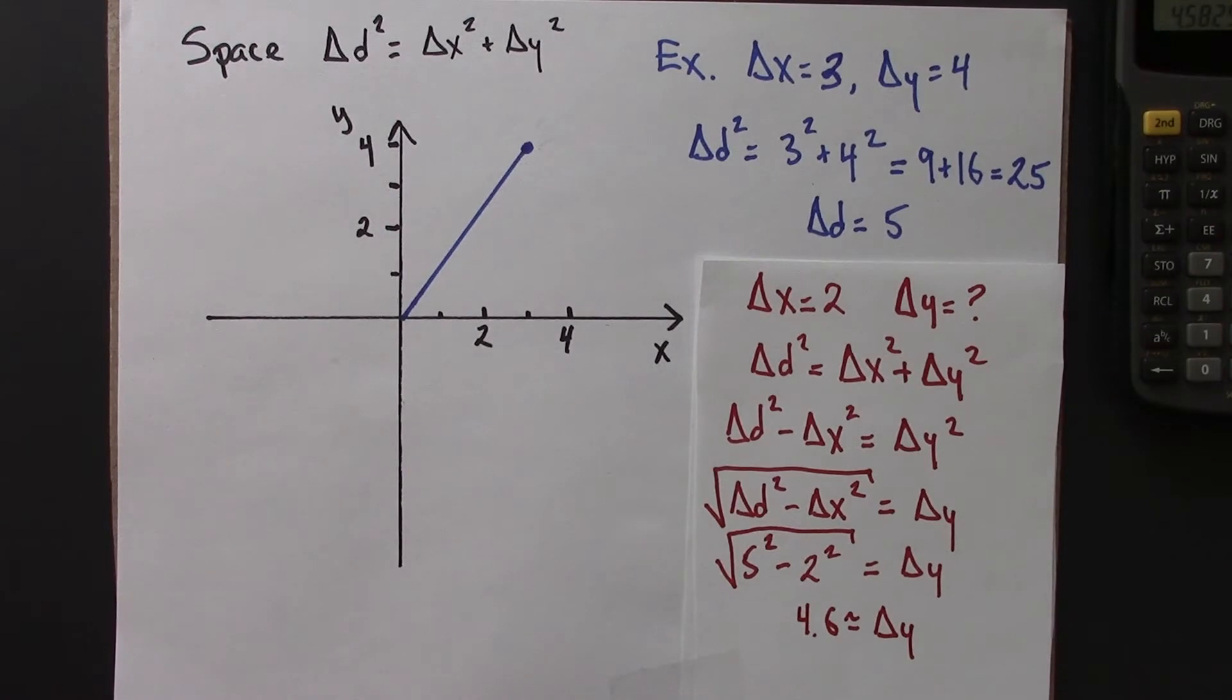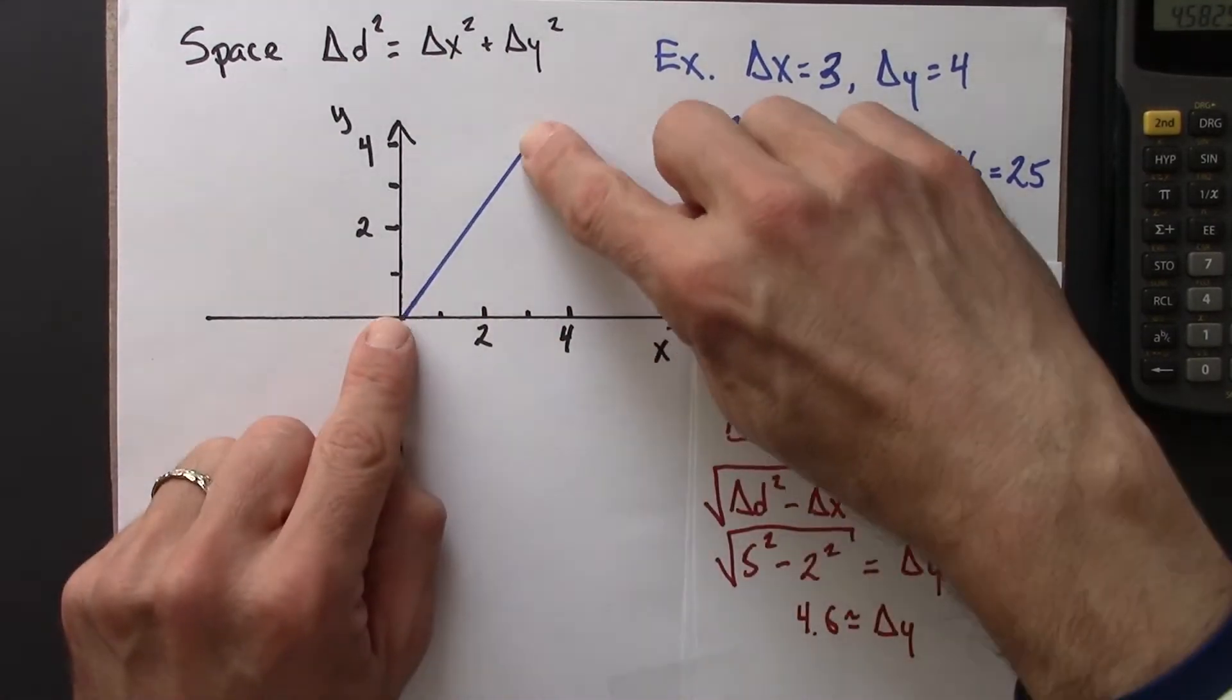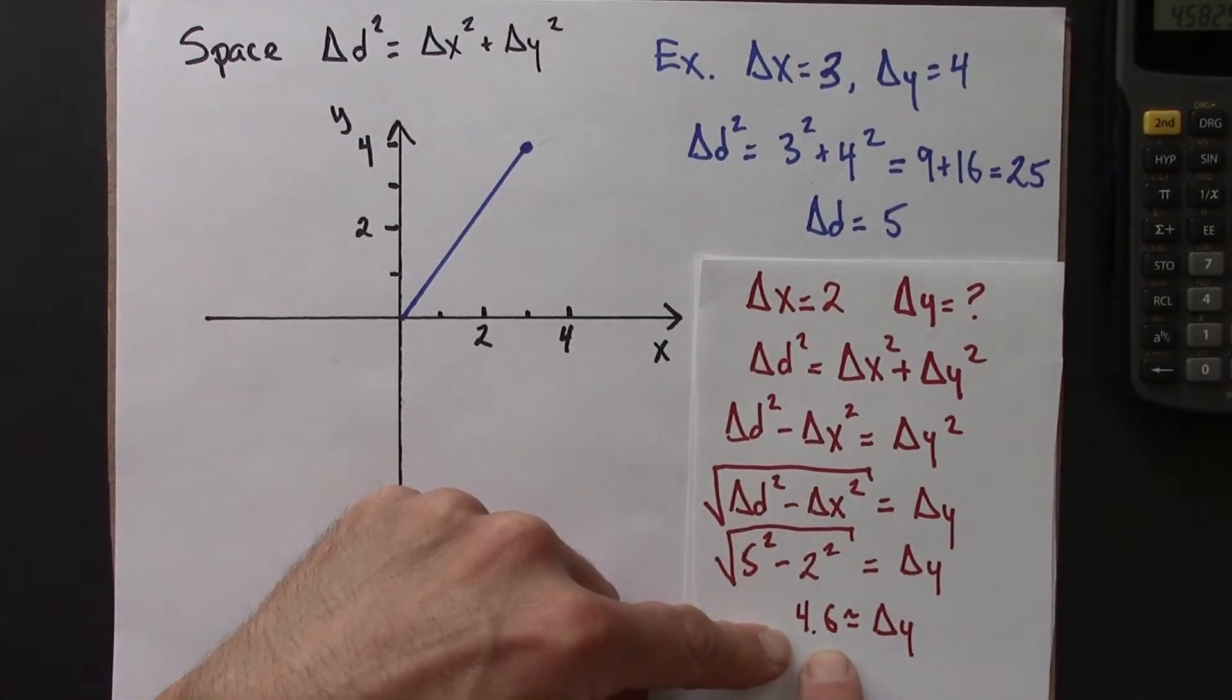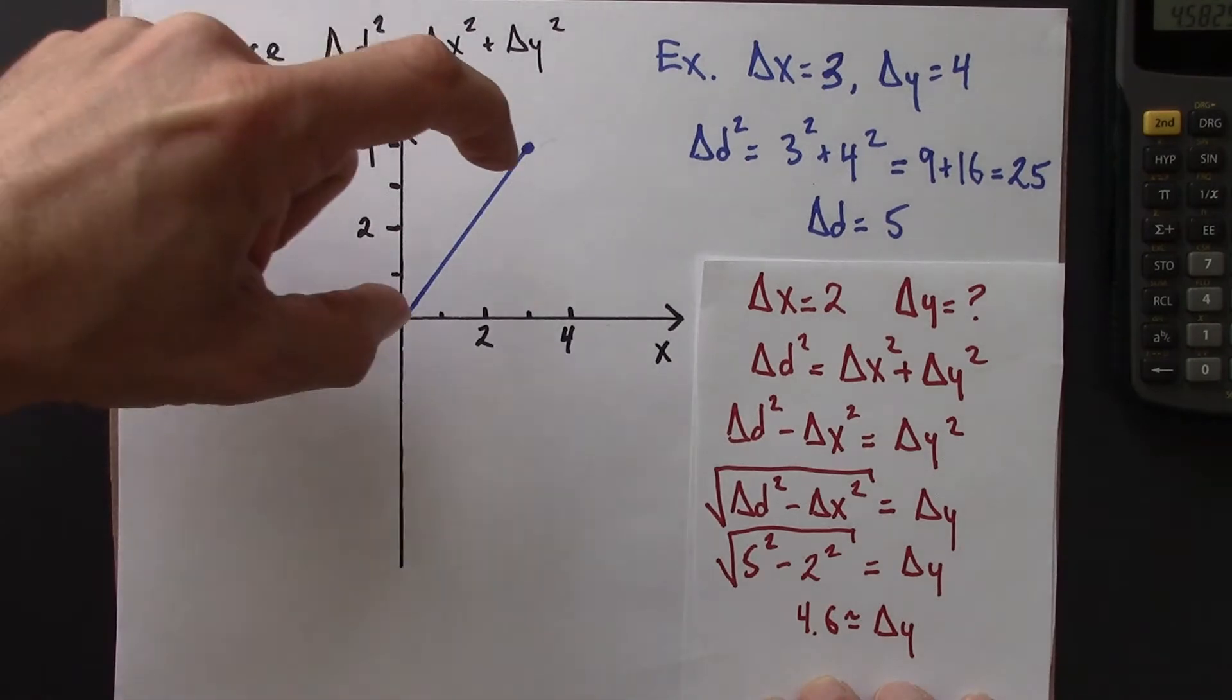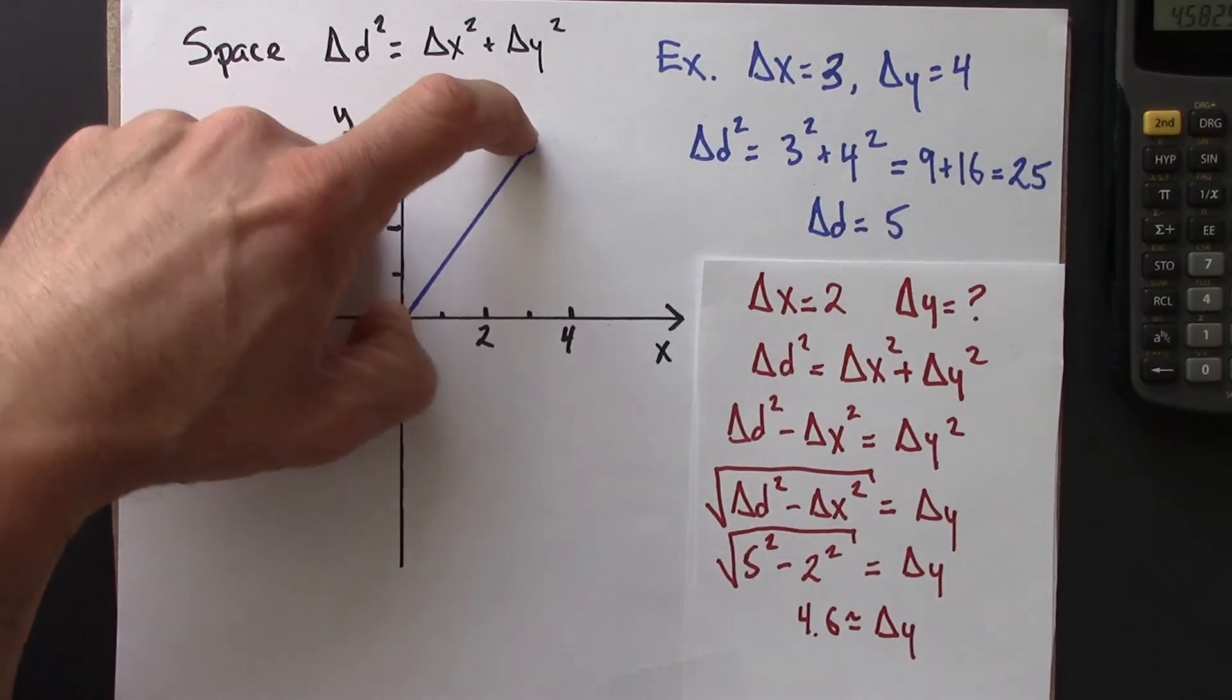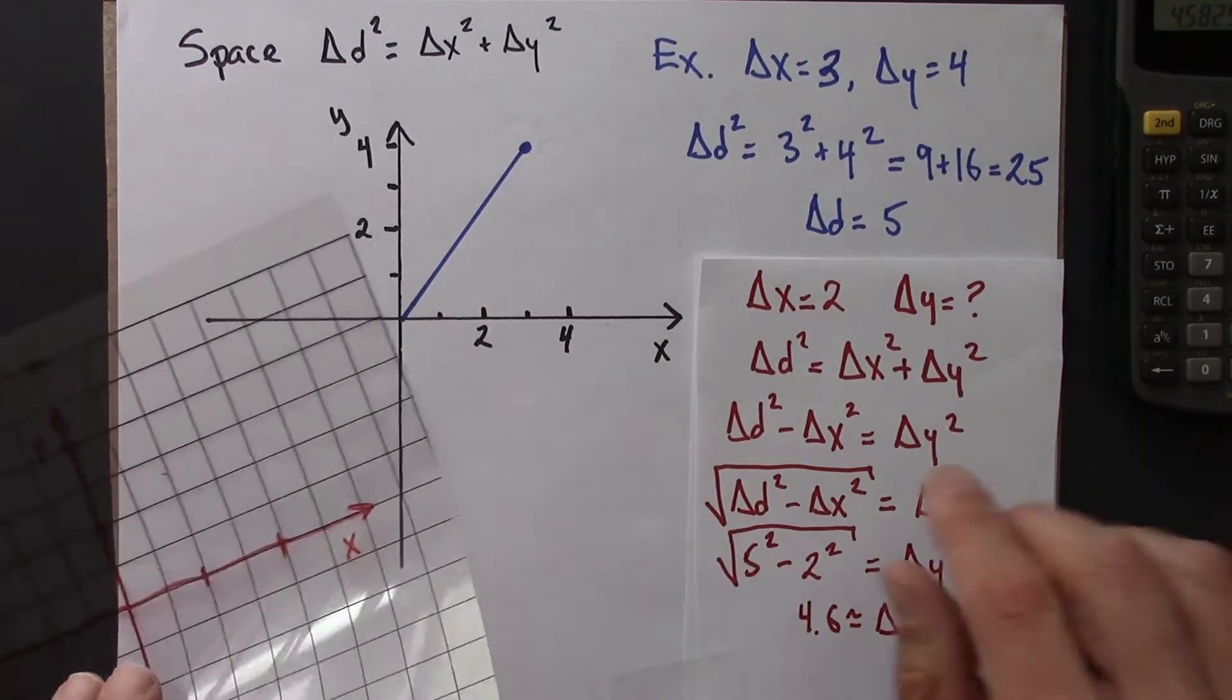Alright, so we've done a bit of algebra. Let's think about what this means geometrically. So what I claim this means is there's some other reference frame, some coordinate system, some choice for axes, for the same two points that has a delta x of 2 and a delta y of 4.6. Why do I claim that? Because this quantity, delta d, the distance is the same in all reference frames. And so if you tell me what delta x is in one reference frame, I can figure out delta y.